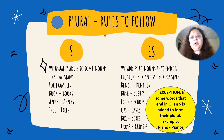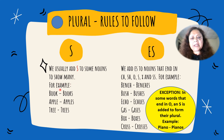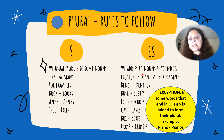Plural rules to follow. We usually add S to some nouns to show many. For example: book, books; apple, apples; tree, trees.